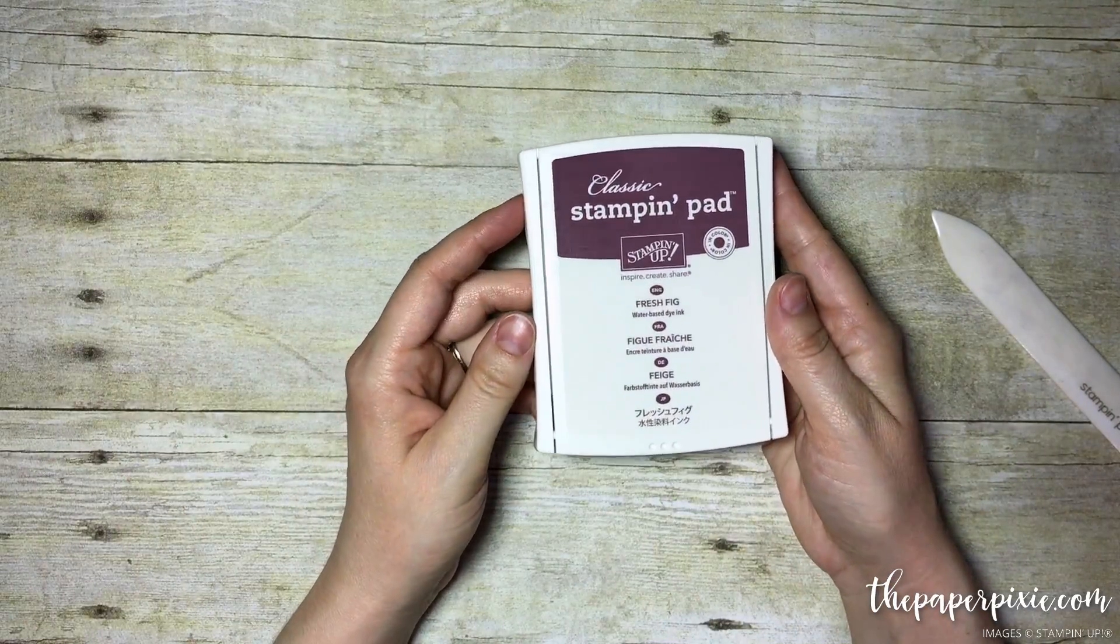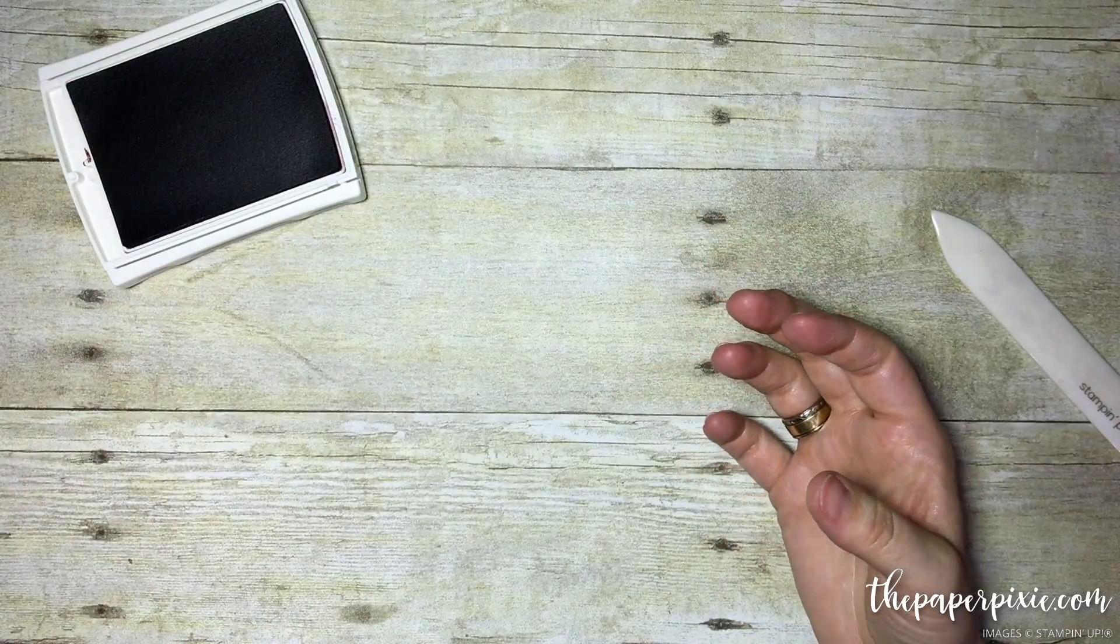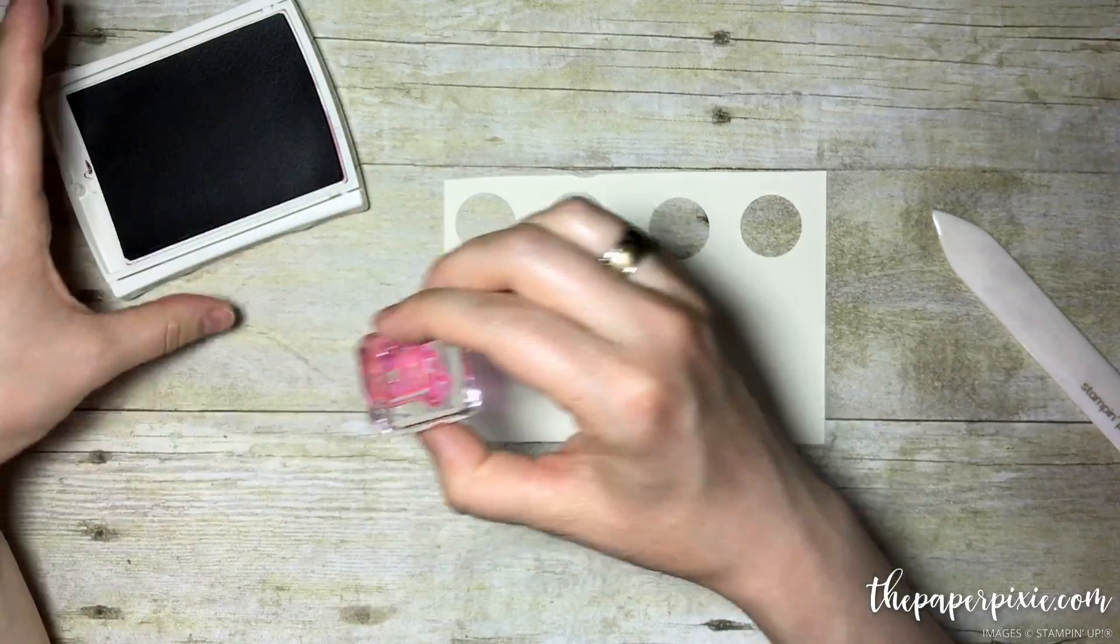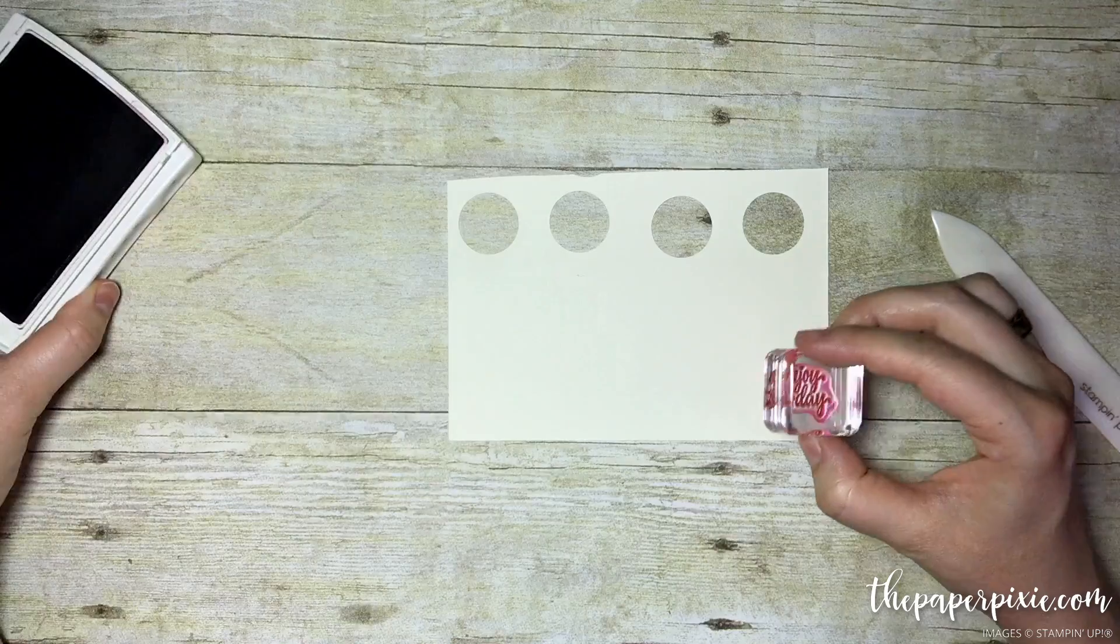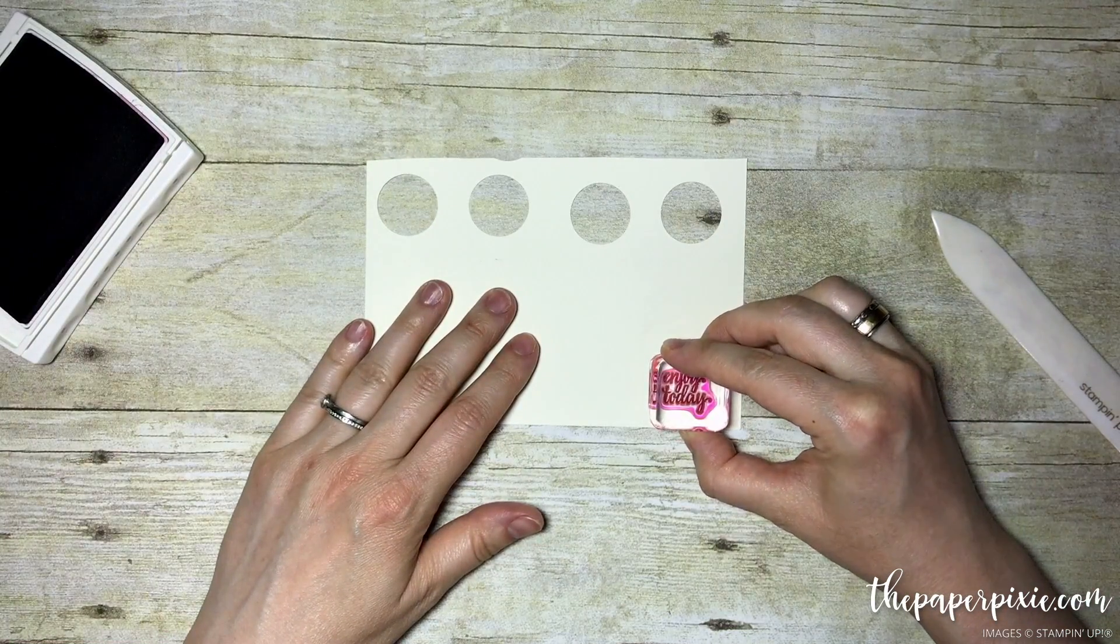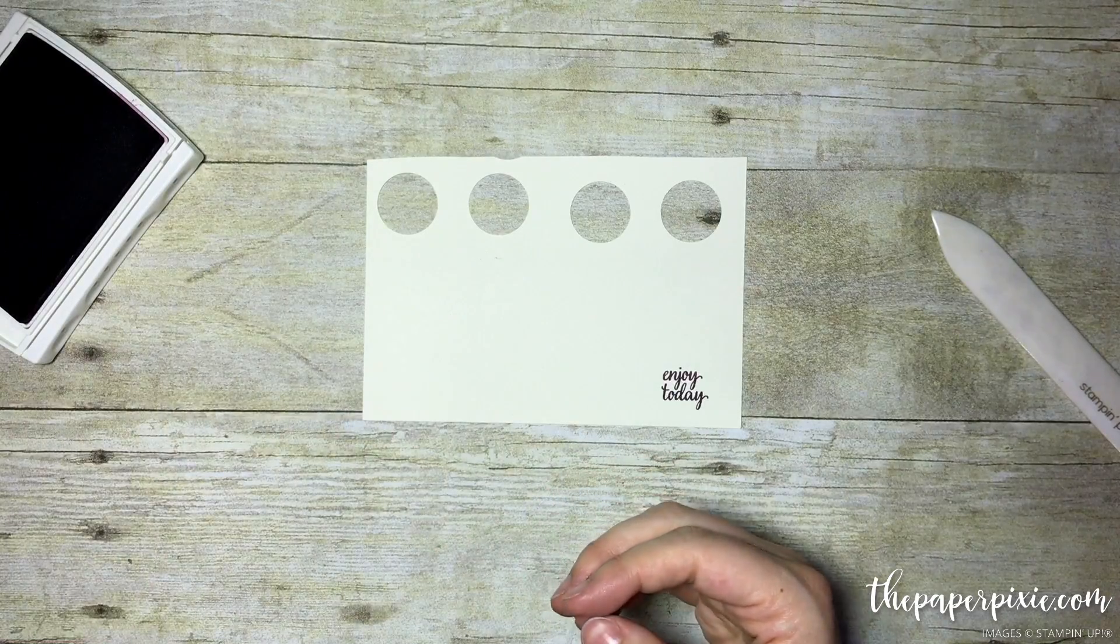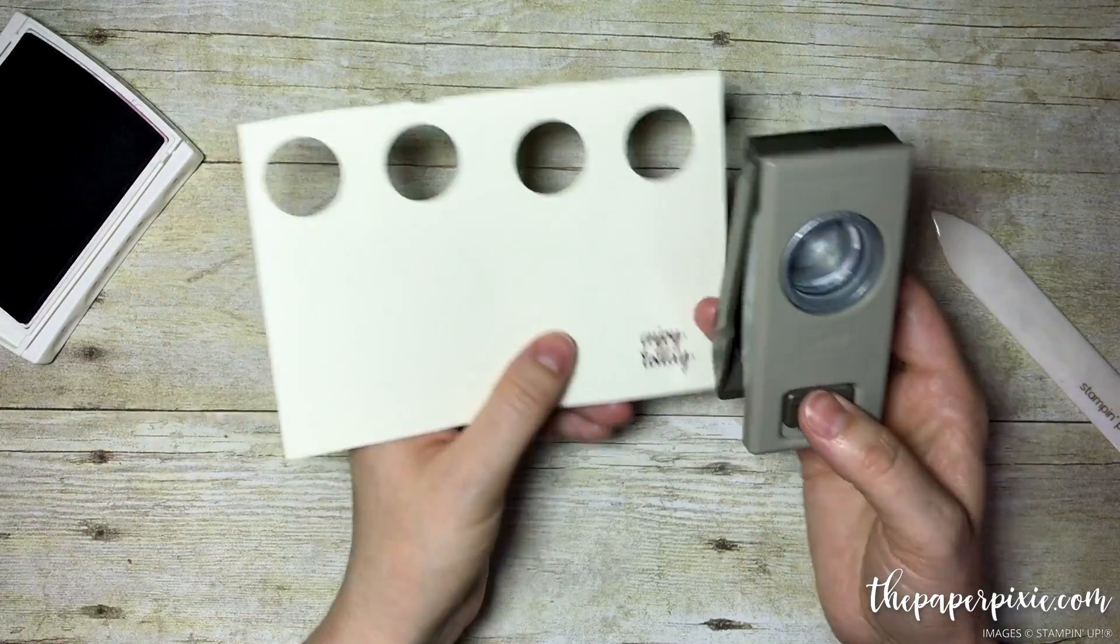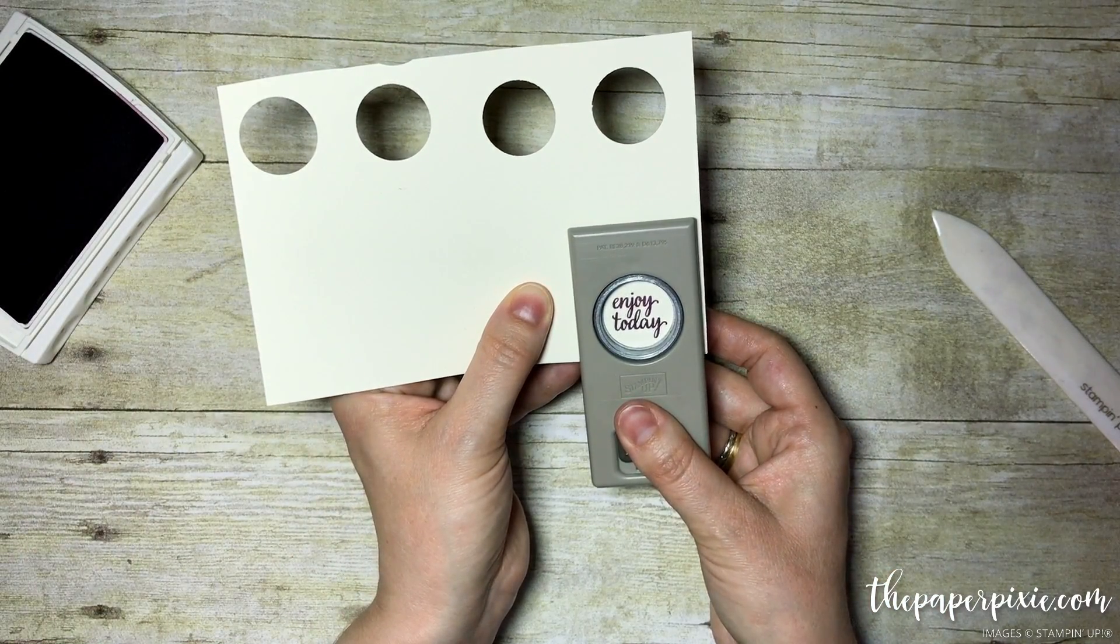I'm going to use another new in-color called Fresh Fig. We're going to stamp that on Very Vanilla, which is one of the coordinating colors to that designer series paper. Tap lightly so you don't get ink everywhere, then stamp straight down and straight up. Using our 1 inch circle punch, I'm going to punch that sentiment out.